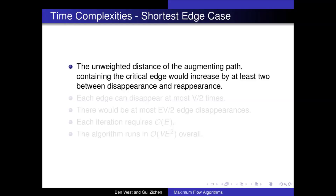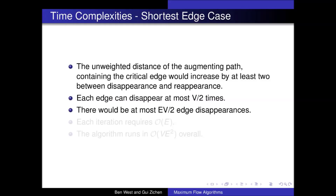On the other hand, if we choose to pick the shortest path from the source to the sink in each iteration, then the time complexity is no longer dependent on the actual maximum flow. We can prove that the unweighted distance of the augmenting path containing the critical edge would increase by at least 2 between disappearance and reappearance. Hence, each edge can disappear at most V/2 times, as the unweighted distance of an augmenting path containing this particular edge is strictly increasing by at least 2 and bounded by V. With E edges, we will observe at most E·V/2 edge disappearances. For each iteration, we could find the shortest augmenting path in the residual graph in O(E) by performing breadth-first search. Thus, the algorithm runs in O(VE²) overall.